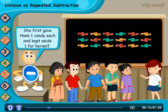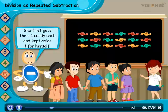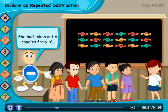She first gave one candy to each of them and kept aside one for herself. She had taken out 6 candies from 18.